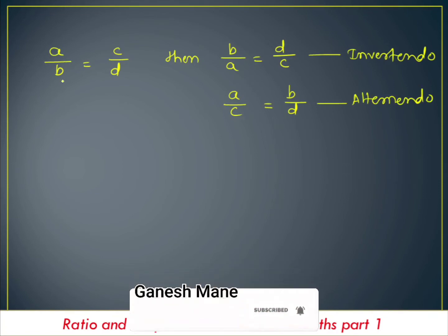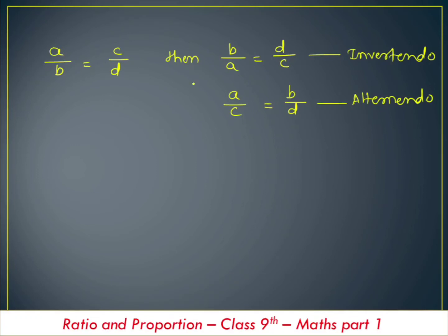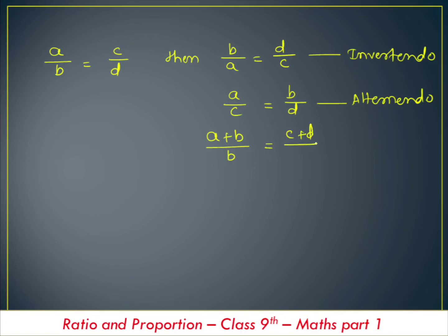So in the alternendo property, we have two ratios. The first term is a divided by b and the second term is b divided by d. Then the next property is componendo. So if a divided by b is equal to c divided by d, then adding the first and second terms: a plus b divided by b is equal to c plus d divided by d.